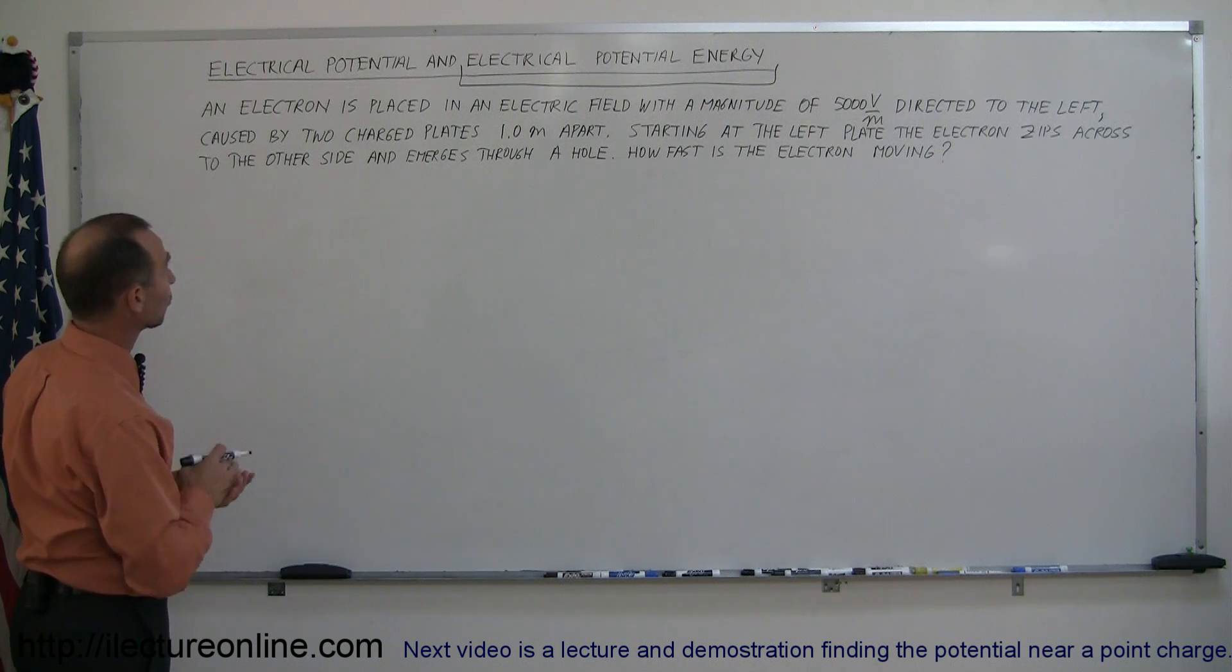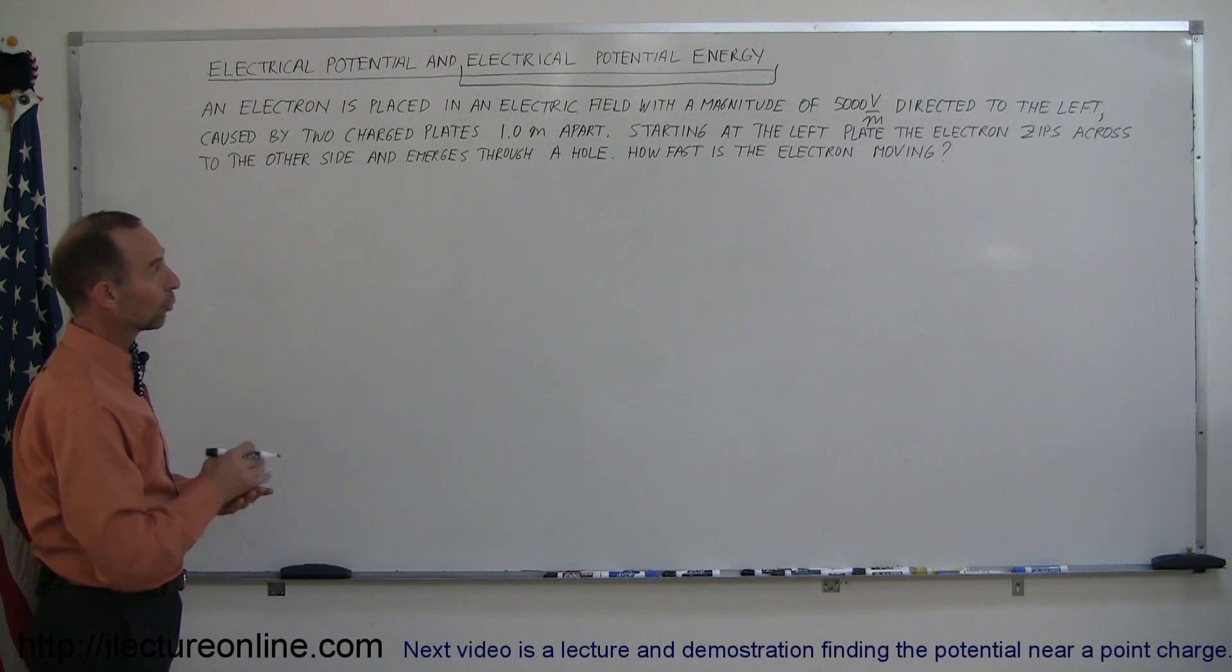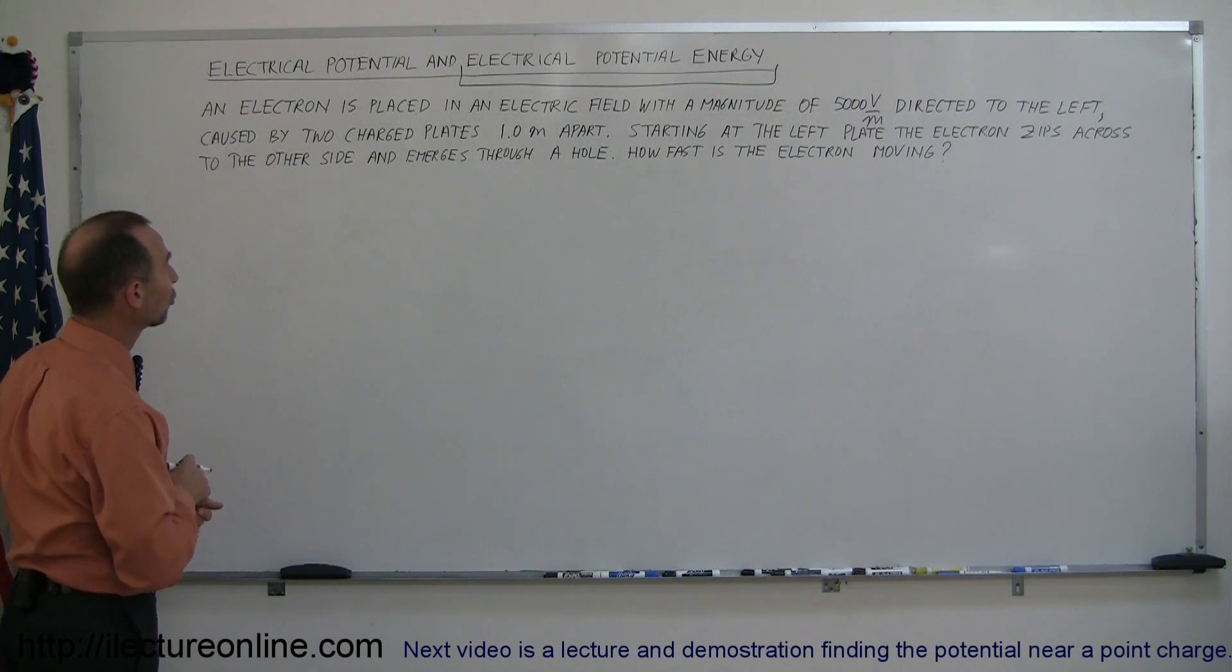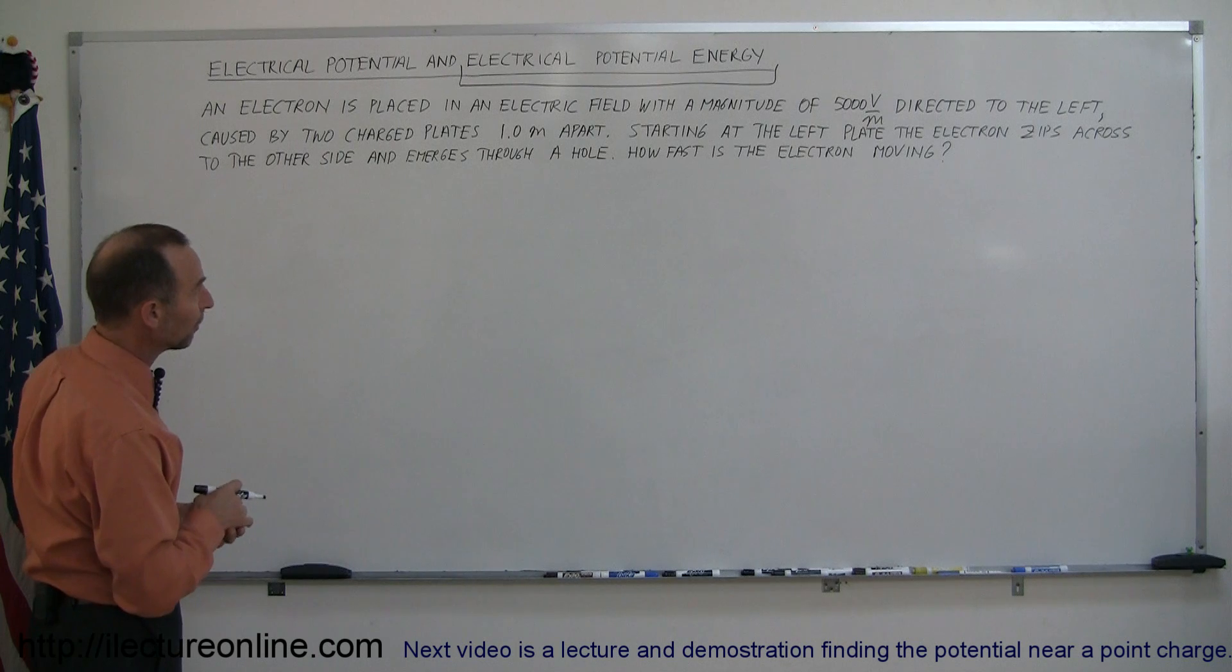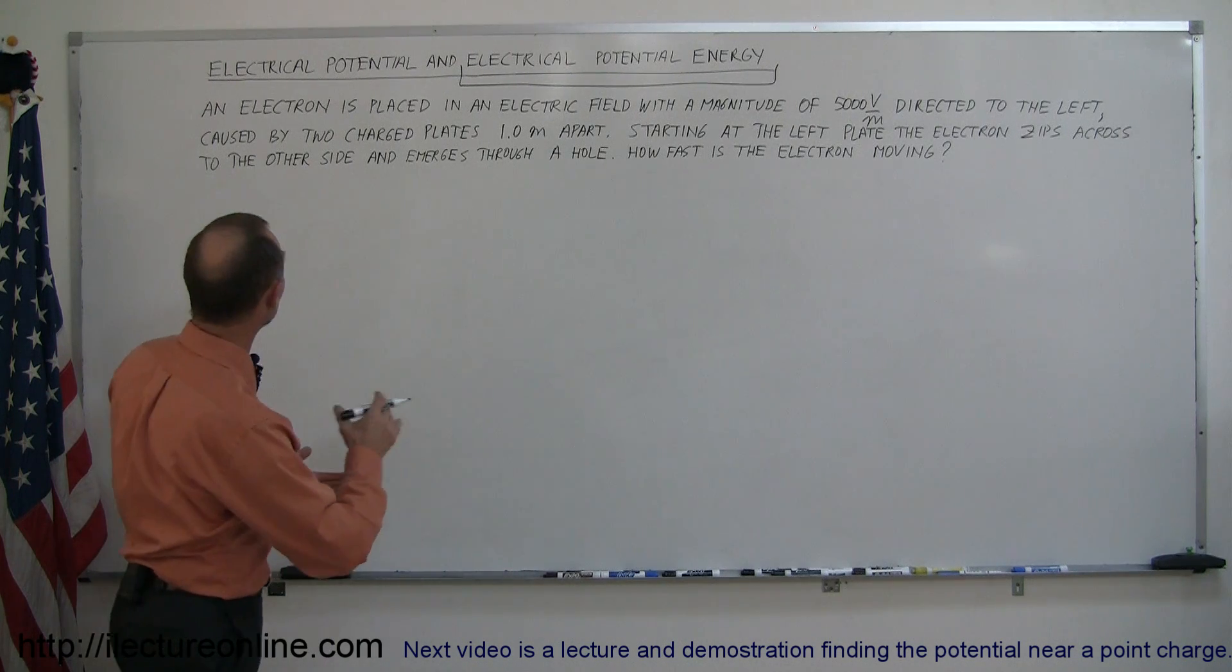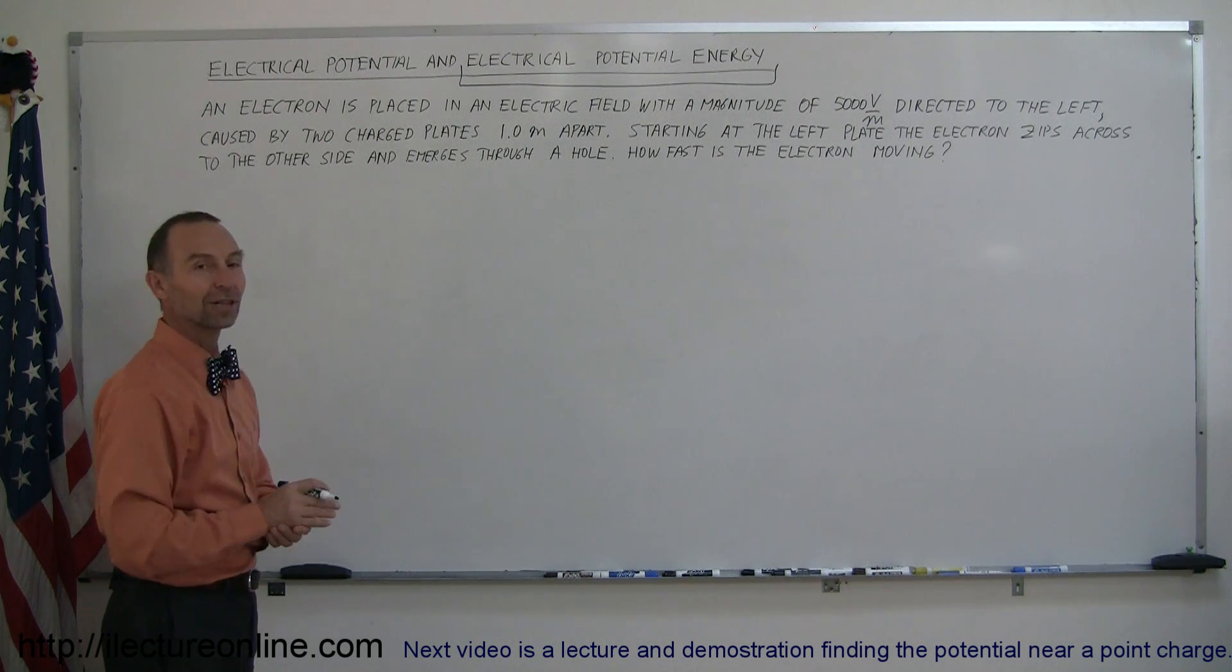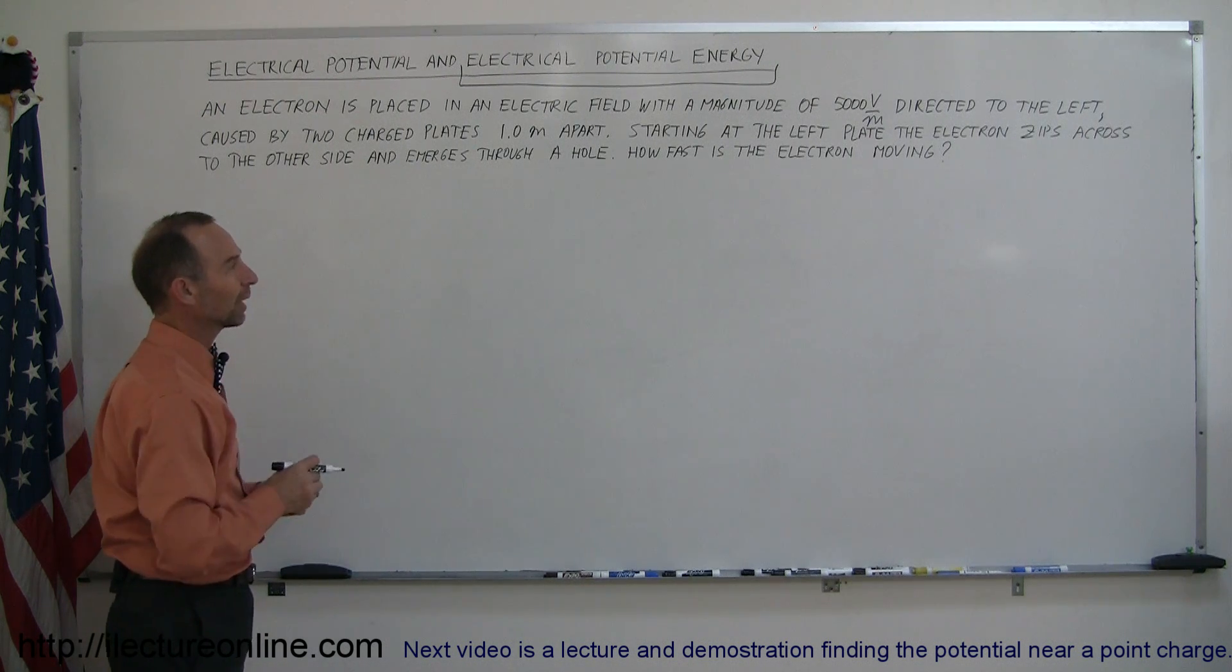An electron is placed in an electric field with a magnitude of 5,000 volts per meter directed to the left caused by two charge plates one meter apart. Starting at the left plate the electron zips across to the other side and emerges through a little hole. How fast is the electron moving when it emerges from that hole?